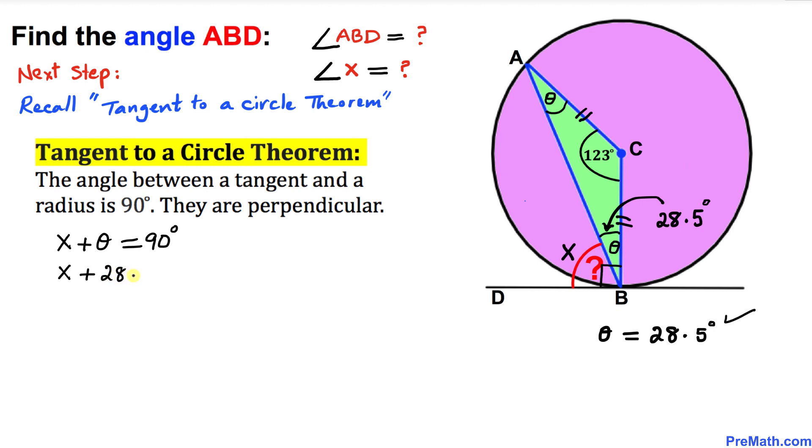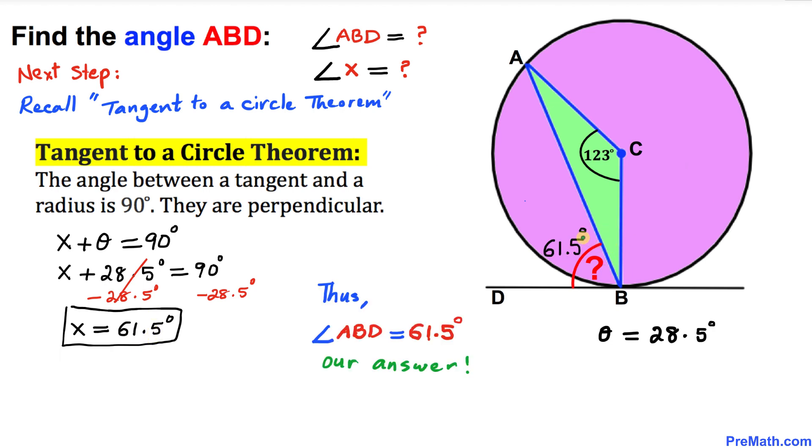Now let's isolate x. I am going to subtract 28.5 degrees on both sides, so we get x equals 61.5 degrees. Thus, our angle x turns out to be 61.5 degrees, so therefore angle ABD turns out to be 61.5 degrees, and that's our final answer.